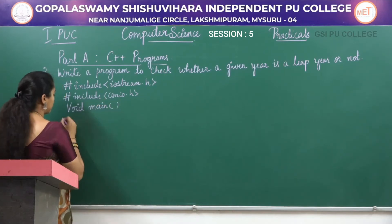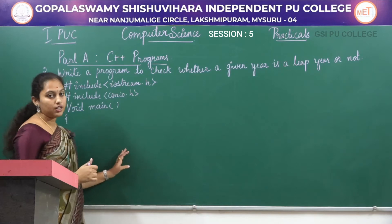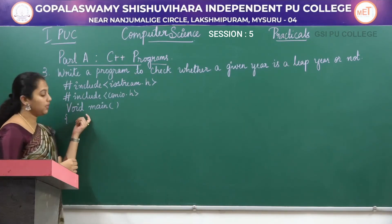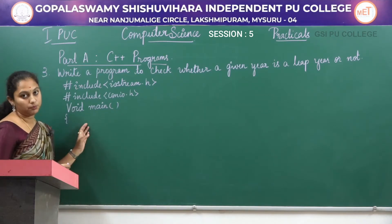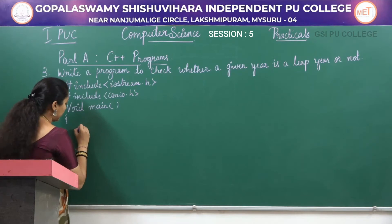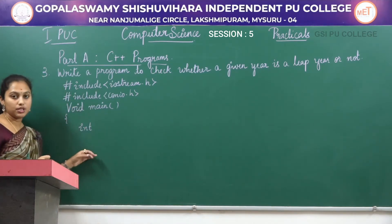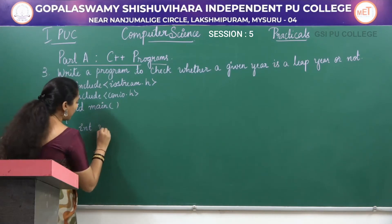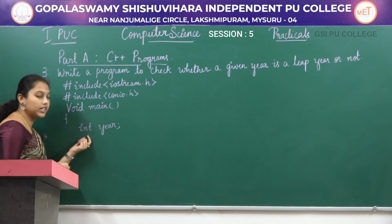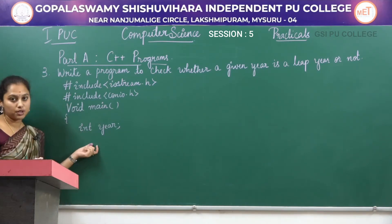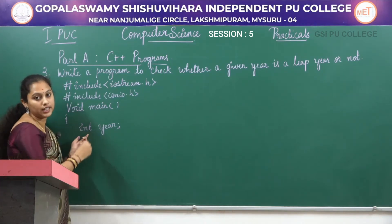In the main function, we are going to write the logic. The return type is void, which means it is not going to return any value. In this section, I am declaring the required variable: int year. I have declared it as int because year comes in numbers, so we use the int data type.